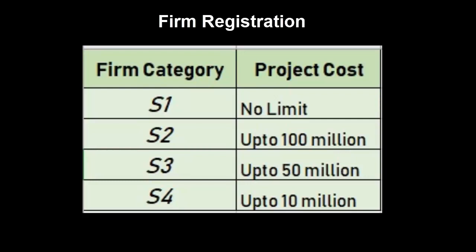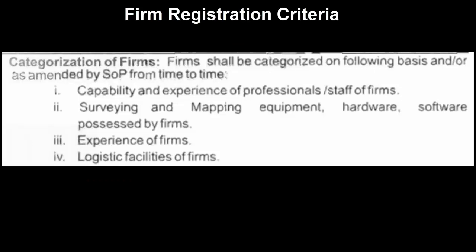A firm can be registered with Survey of Pakistan in the following four categories: S1, S2, S3, and S4. Firms can accordingly bid up to the project cost defined against their category. Firms will be evaluated based on four parameters: professionals, survey and mapping equipment, experience, and logistic facilities such as vehicles and buildings. Each parameter has specific marks allocated to determine the category of the firm.